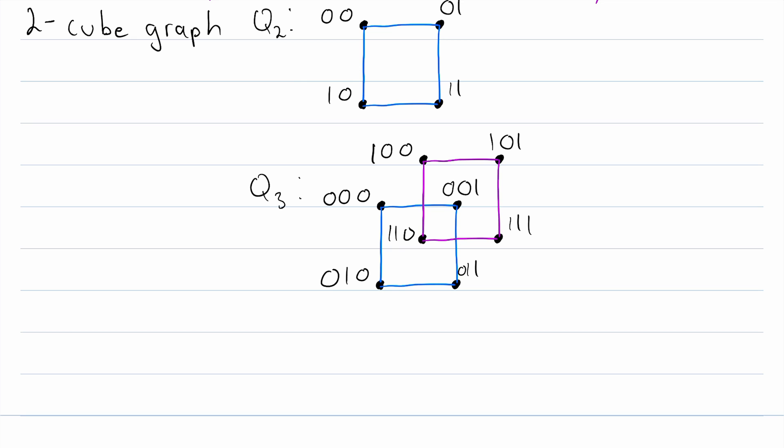Now for the new edges, we just join the vertices that differ in exactly one bit. These two vertices differ in just the first bit, so they are adjacent. These two vertices also differ in just the first bit, so they are adjacent. Same thing with these two vertices, so they get an edge. And same thing with those two vertices, so they get an edge.